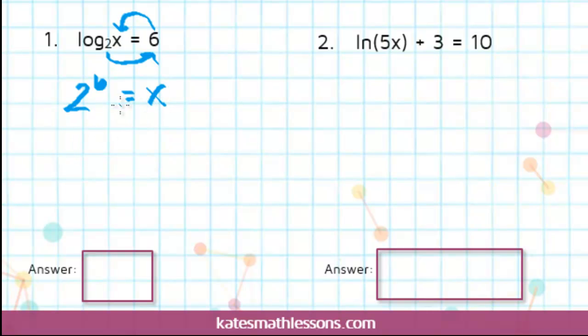So this gives us x equals 2 to the sixth power. Two times itself six times is 64, so you could just say x equals 64. So that's a pretty simple one.